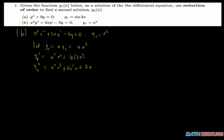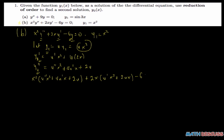The next step is to make a substitution. We substitute y2, y2 prime, and y2 double prime into the equation. So substituting, we have x squared times (u double prime x squared plus 4u prime x plus 2u), plus 2x times (u prime x squared plus 2ux), minus 6 times ux squared.